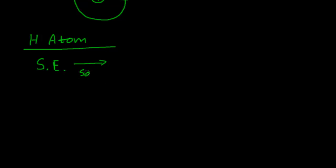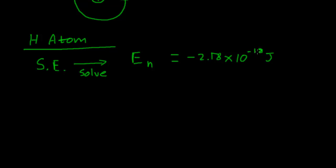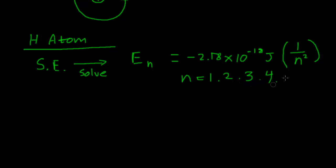Those energies are quantized by the number n, and we've seen this already. The exact formula is: E = −2.18 × 10⁻¹⁸ joules × (1/n²), where n is an integer — 1, 2, 3, 4, and so on up to infinity. This is exactly the same formula that Niels Bohr derived, which makes sense because Bohr got those energies right. So the Schrödinger equation confirms that known result.